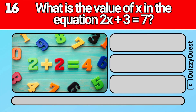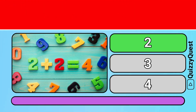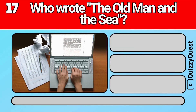What is the value of x in the equation 2x + 3 = 7? Who wrote The Old Man and the Sea?